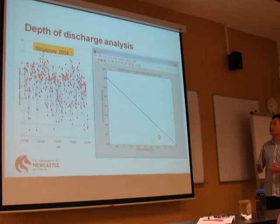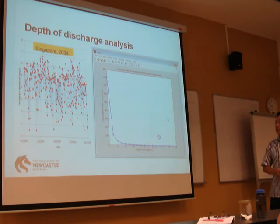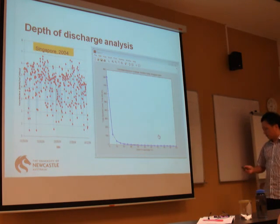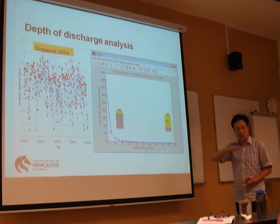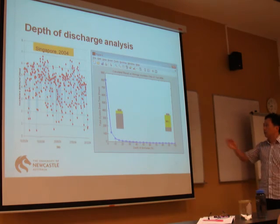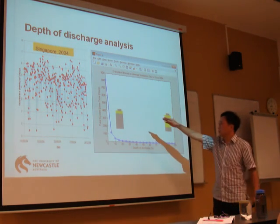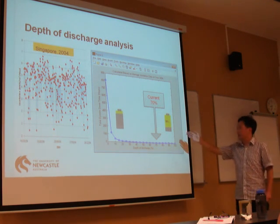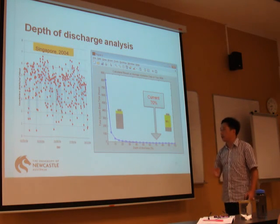Next, I perform a detailed parametric study on DOD versus system downtime. This is equivalent to setting up 21 identical systems and running them throughout one year using the Singapore 2004 insolation data. The result shows that at zero percent DOD — meaning the system cannot draw power from the battery — there are more than 800 hours not available per year. As we increase the DOD value, the downtime is significantly reduced. Our current setting of 70% DOD results in zero system downtime, meaning perfect reliability.